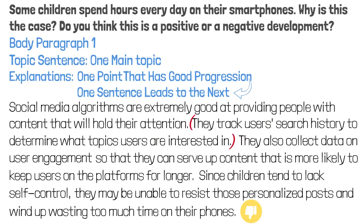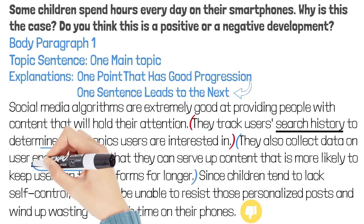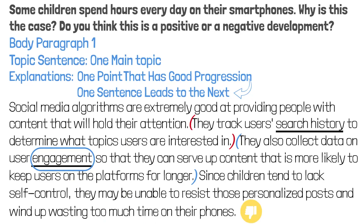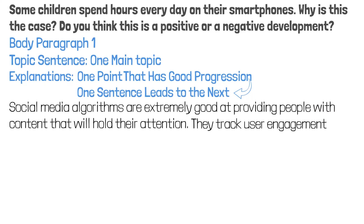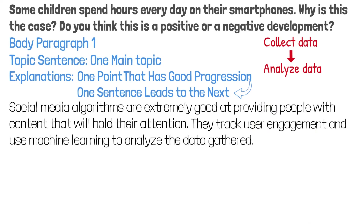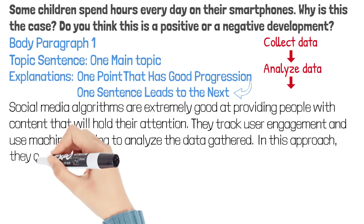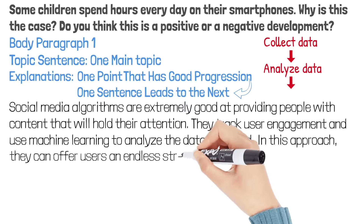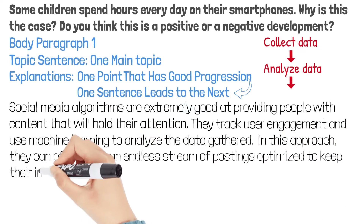Does this sentence lead to this one? No, it doesn't — they are just a list of two different things. So now I will use only user engagement to support the topic sentence. They track user engagement. What do they do next? They use machine learning to analyze the data gathered. So they collect and analyze data. How does this help to hold users' attention? In this approach, they can offer users an endless stream of postings optimized to keep their interest.